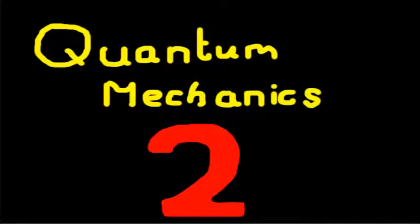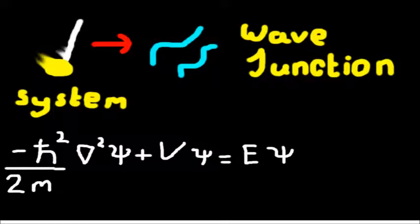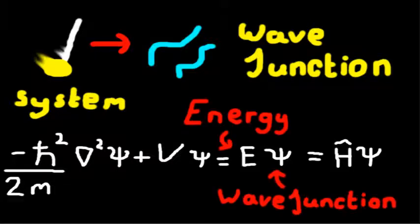For a quick recap, in the last part we made up a mathematical description for a physical system, and we called it a wave function. Then we talked about how any observable in normal life has a quantum analogue called an operator that acts on this wave function. From this we got to Schrödinger's equation, and this gave us a way to find the energy. Schrödinger's equation is the energy operator, normally denoted H, and it acts on a wave function phi, spitting out the energy of the system E times the wave function phi.